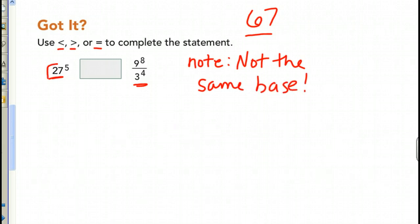We know 27 is equivalent to 3 to the 3rd. And since we're raising 27 to the 5th power, this now becomes 3 to the 3rd all raised to the 5th.